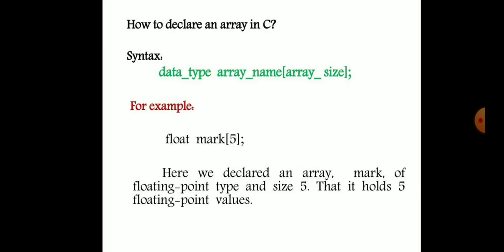How to declare the array in C: the syntax is data type, then array name and array size. For example, float mark[5]. Here the data type is float, the array name is marks, and the size is 5.